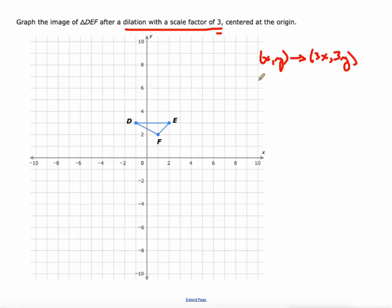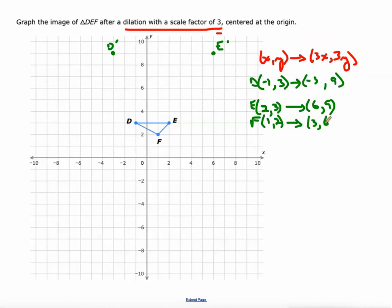So D, which is currently at negative 1, positive 3, we're going to multiply both of those by 3, because it's being dilated by a scale factor of 3. And that becomes negative 3, 9. So there's E prime. And F, which is currently at 1, 2, when you multiply both of those by 3, ends up at 3, 6. So there's F prime.